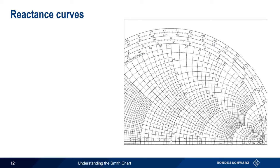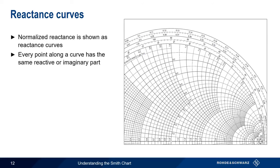Similar to the resistance circles, the Smith Chart also contains reactance curves that show normalized reactance. Every point along a reactance curve has the same reactive or imaginary part. For example, every point along this curve will have a normalized reactive part equal to 1.0. Points lying on this curve will all have a normalized reactance of 3.0.